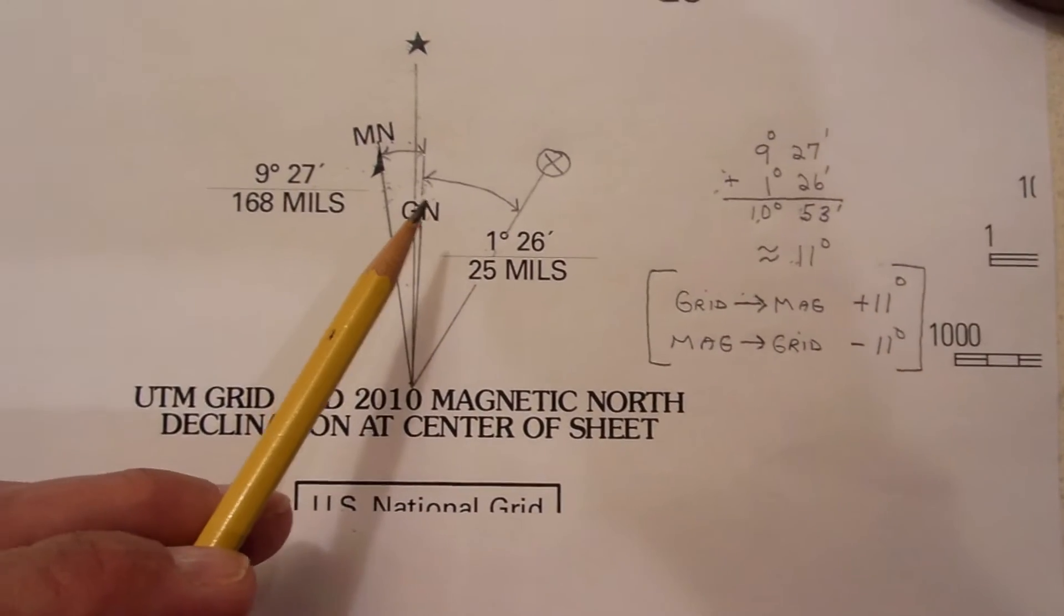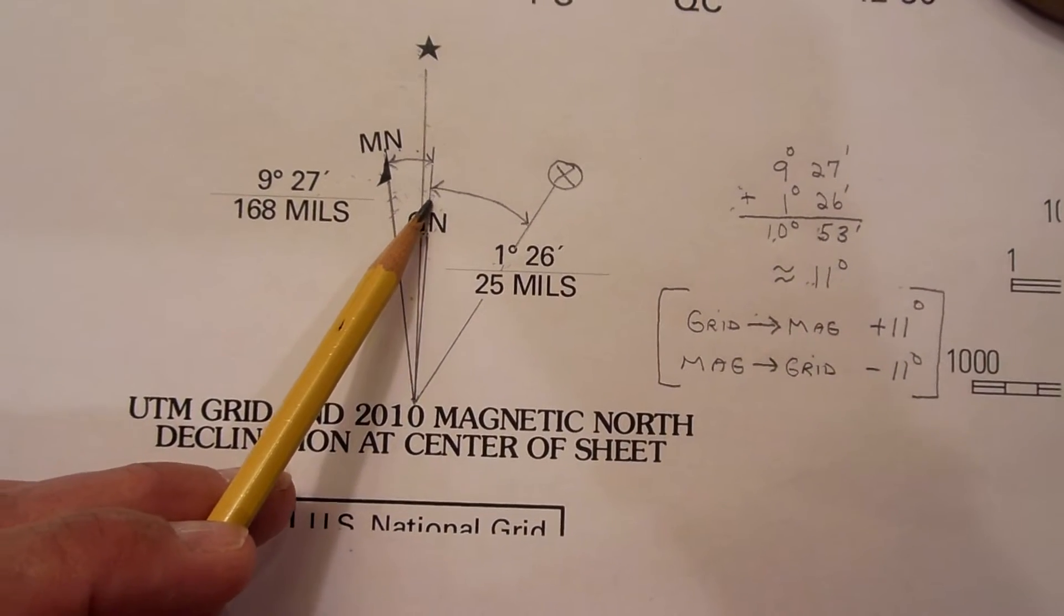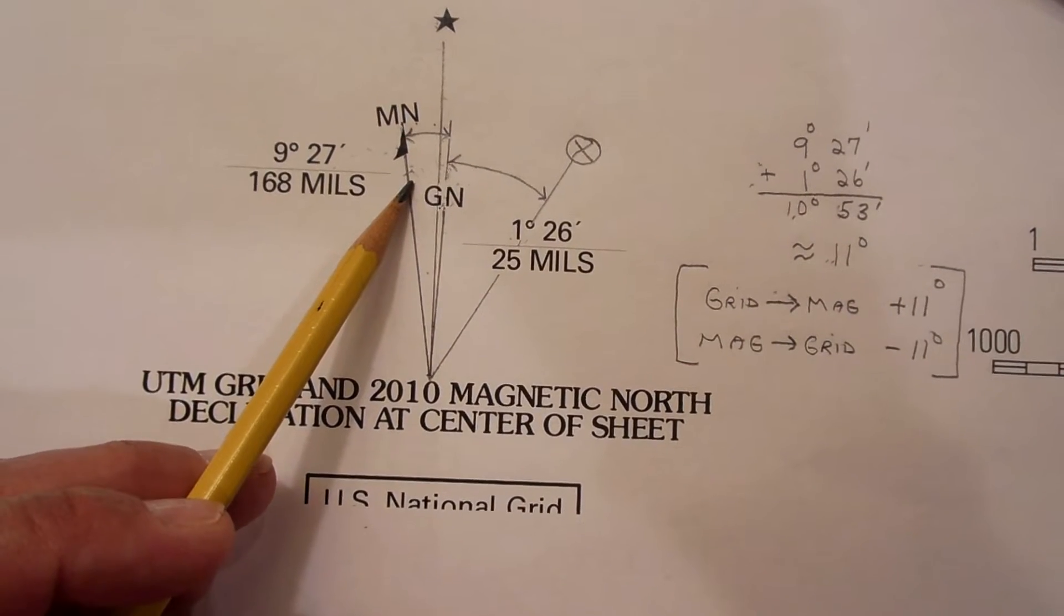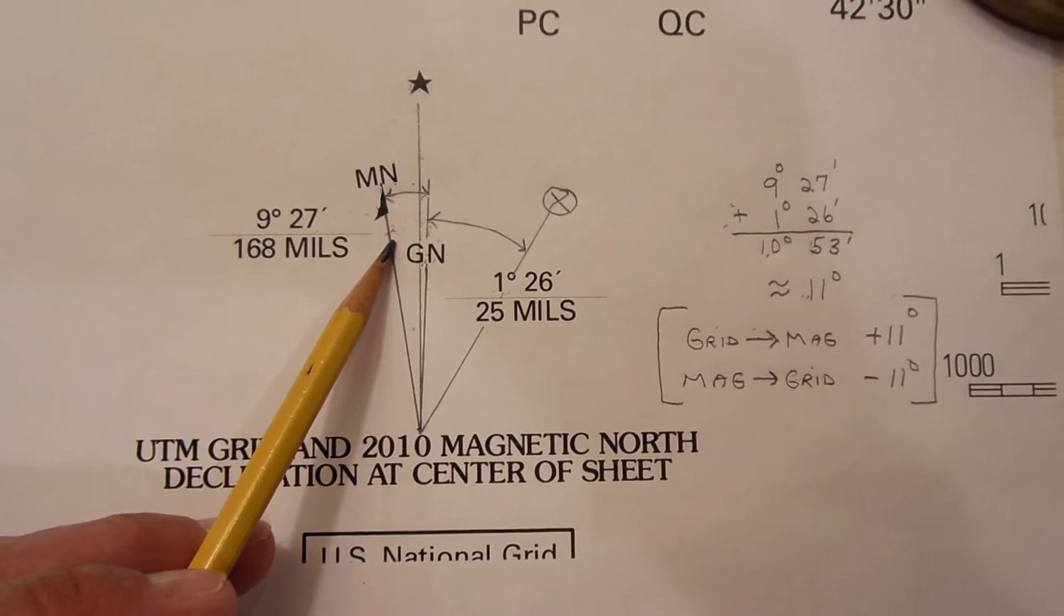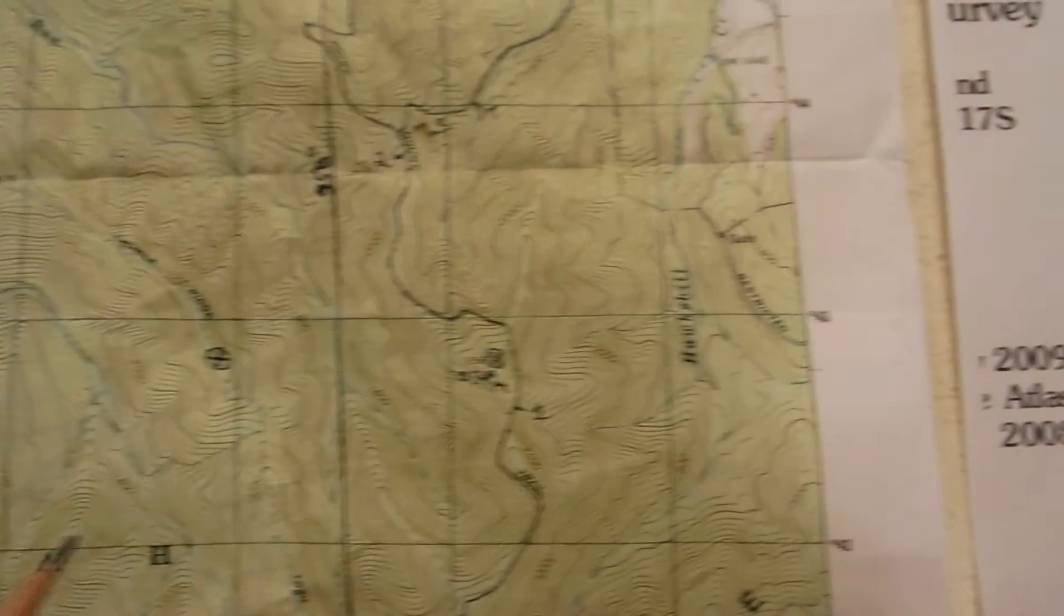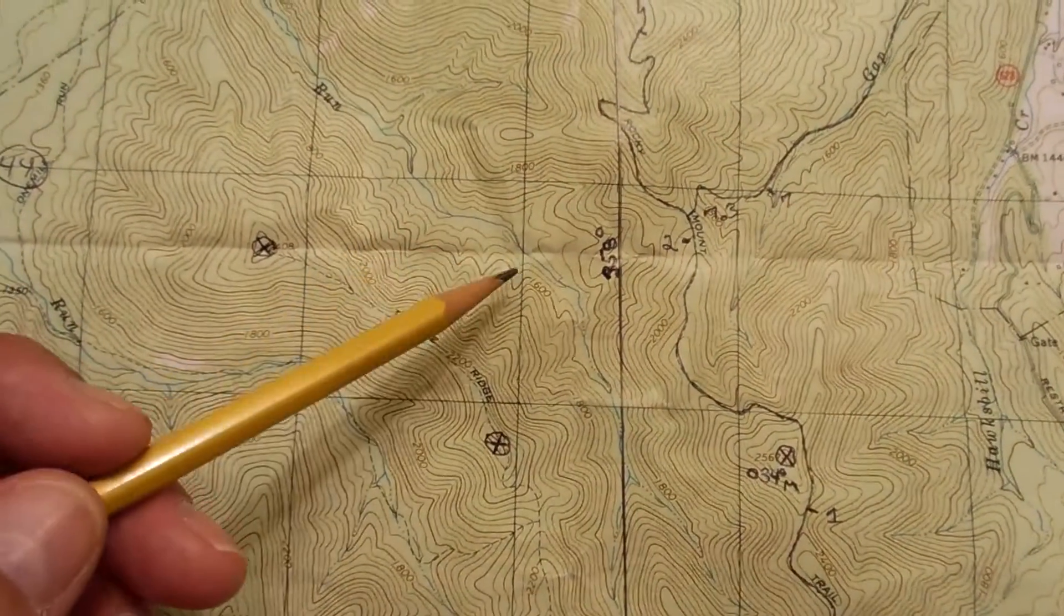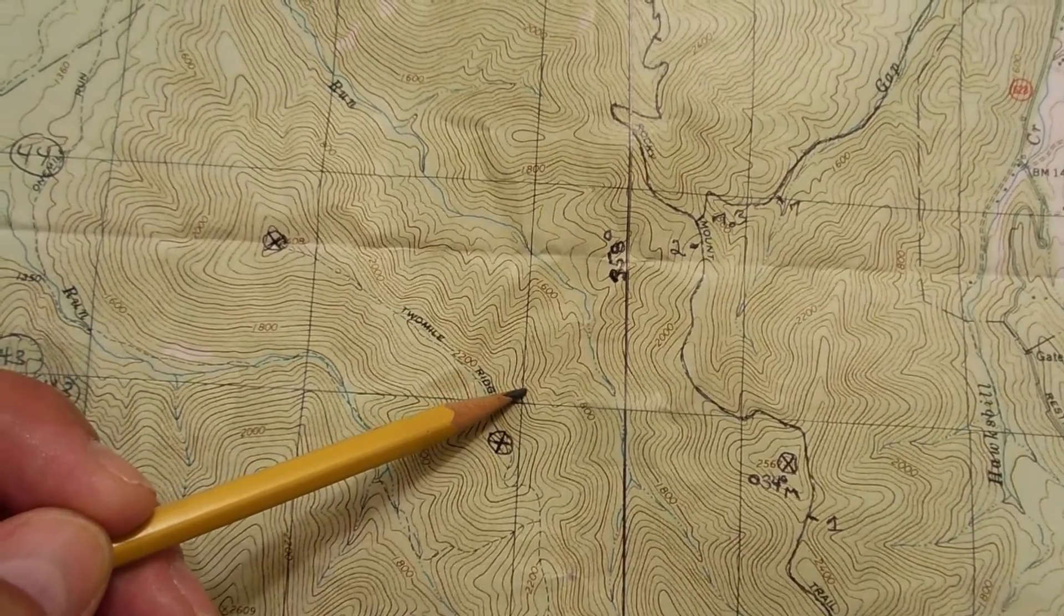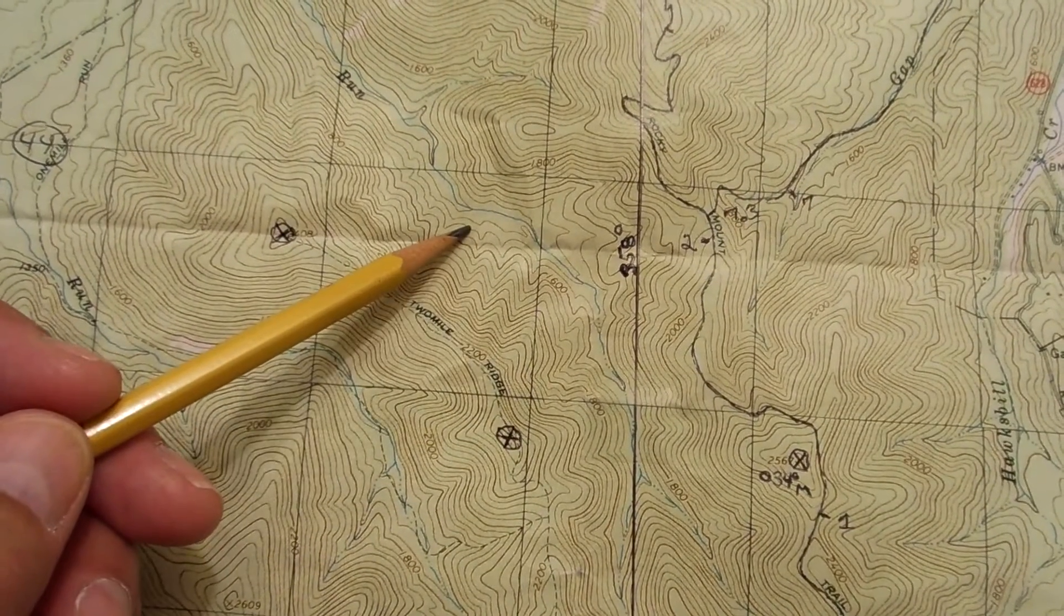So there is an 11 degree angle between grid north and magnetic north. And what that means when you're using these maps, here's grid north. Magnetic north is going to be pointing 11 degrees to the west, like this.